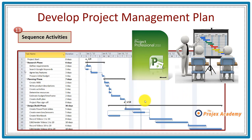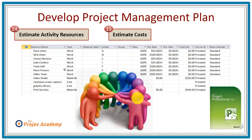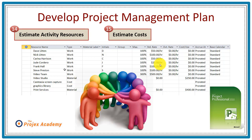So now you've got a first draft, which brings us to step fourteen: estimate the activity resources. Microsoft Project comes to the rescue here. I've created a resource pool — notice it shows humans, but also non-human resources such as materials, equipment, and tools. Here you can enter work and cost details; Microsoft Project is very powerful in that regard.